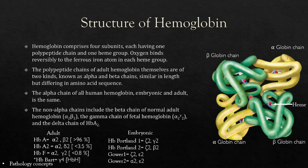The alpha chain of all human hemoglobin — embryonic and adult — is the same, but non-alpha chains are different. They include the beta chain of normal adult hemoglobin known as alpha-2 beta-2, the gamma chain of fetal hemoglobin known as alpha-2 gamma-2, and the delta chain of HbA2 known as alpha-2 delta-2.